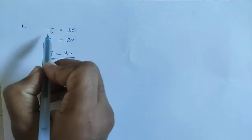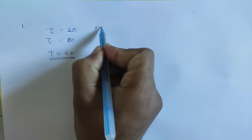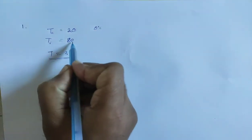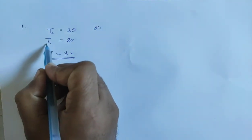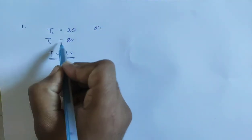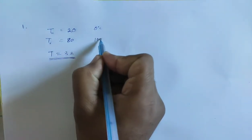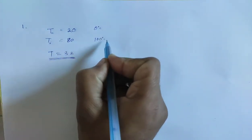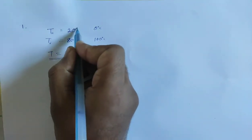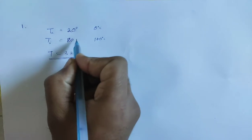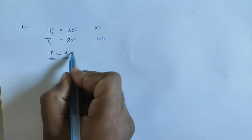We know that in Celsius, ice is at 0 degrees and steam point is at 100 degrees Celsius. So when we map 20 to 0, and 80 to 100, then what will 32 correspond to?